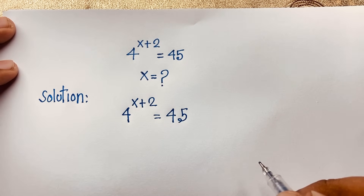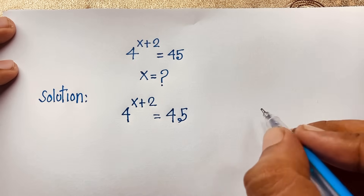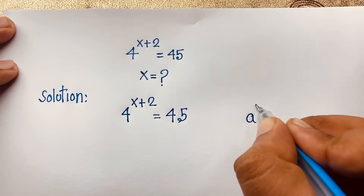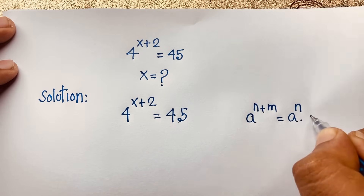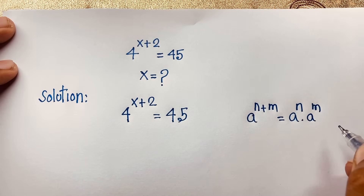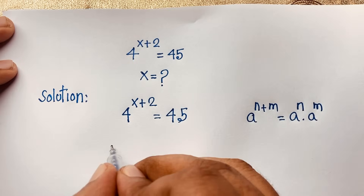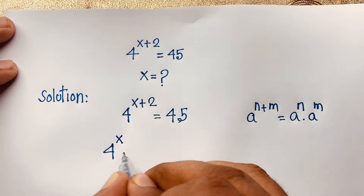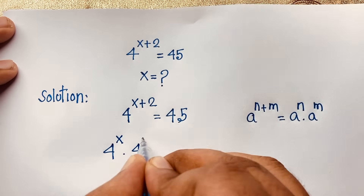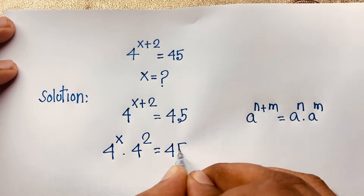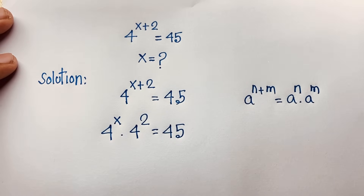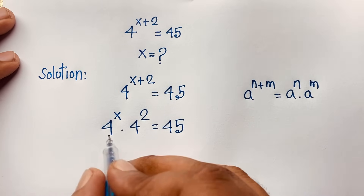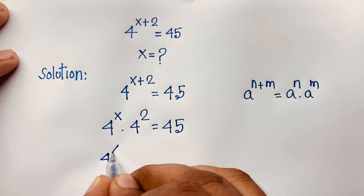I will use the formula: a to the power n plus m equals a to the power n times a to the power m. Applying this formula here, it will be 4 to the power x times 4 to the power 2, which is equal to 45.